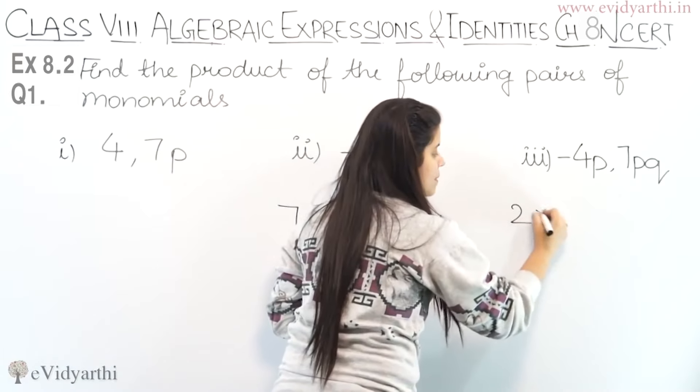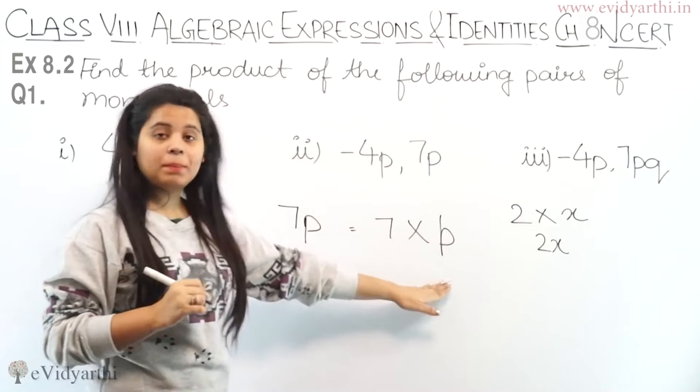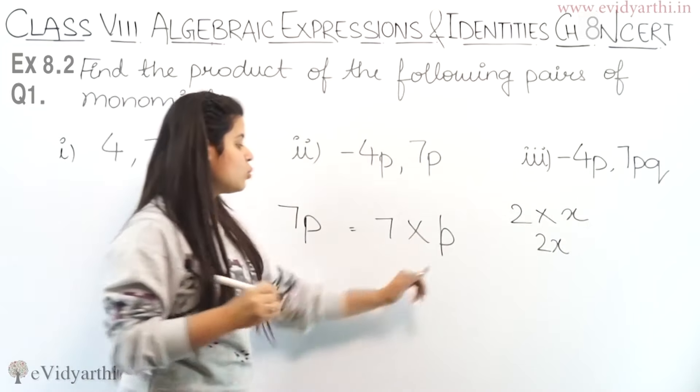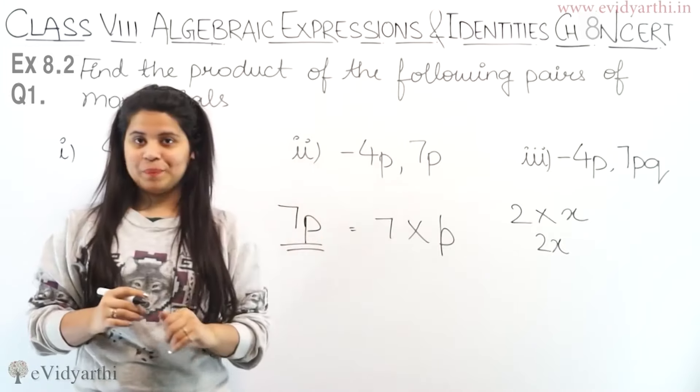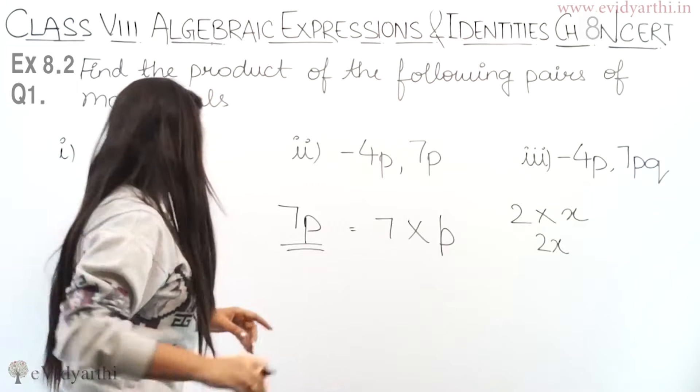If we have 2 into x, then it is 2x. Similarly, P is a variable, so 7 into P becomes 7P. Right? This means a constant and variable can be multiplied.